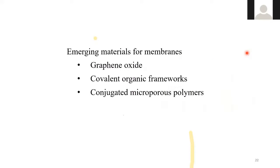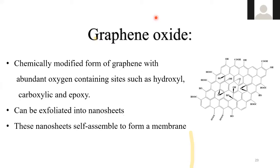The last part of the presentation covers emerging materials for membranes, a very popular topic in the membrane community. The first is graphene oxide (GO), a modified form of graphene with many oxide groups such as carboxylate, hydroxyl, and epoxy groups, which provide tremendous opportunities for functionalization with desired functional groups.